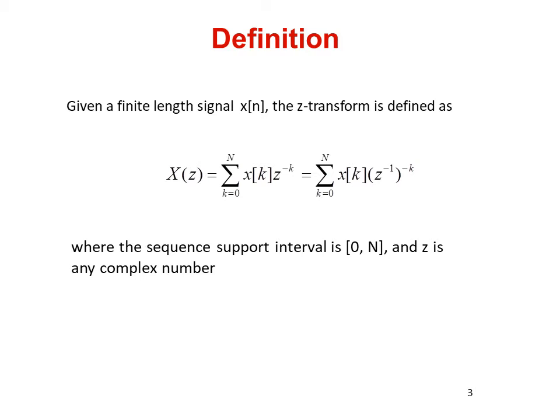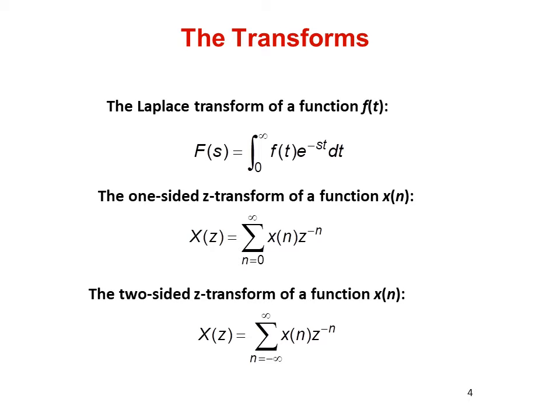Returning to the original sequence, the inverse Z-transform x[n] requires finding the coefficient associated with the nth power of z raised to the power minus n. The Laplace transform is used to handle piecewise continuous or impulsive force. We have the one-sided or unilateral Z-transform and the two-sided or bilateral Z-transform. The only difference between the two types is in the limits. The unilateral Z-transform has a limit of n going from 0 to infinity, whereas the bilateral Z-transform has a limit of n from minus infinity to plus infinity.